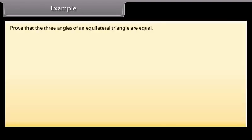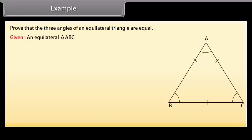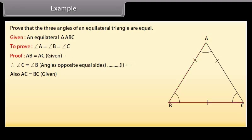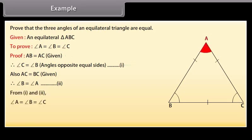Example: Prove that the three angles of an equilateral triangle are equal. Given an equilateral triangle ABC, we have to prove that angle A is equal to angle B which equals angle C. Proof: AB is equal to AC (given). Therefore, angle C is equal to angle B because angles opposite equal sides are equal — mark it as (1). Also, AC is equal to BC (given). Therefore, angle B is equal to angle A — mark it as (2). From (1) and (2), angle A is equal to angle B which is equal to angle C. Hence, the result.